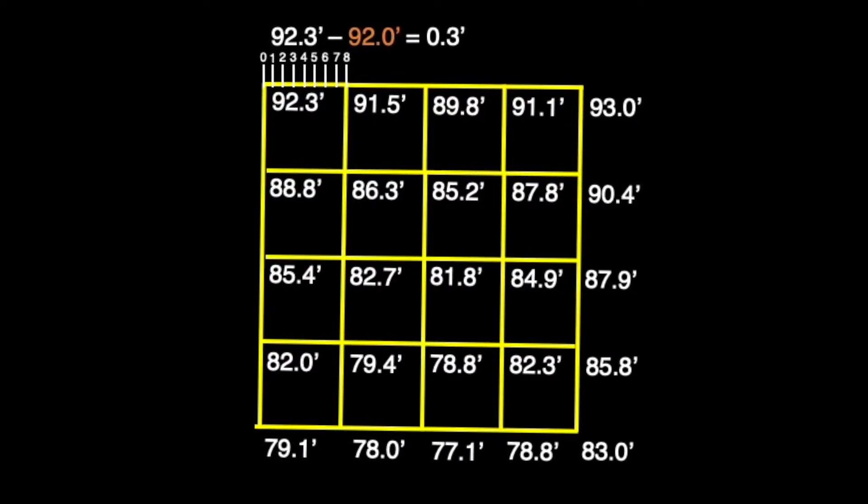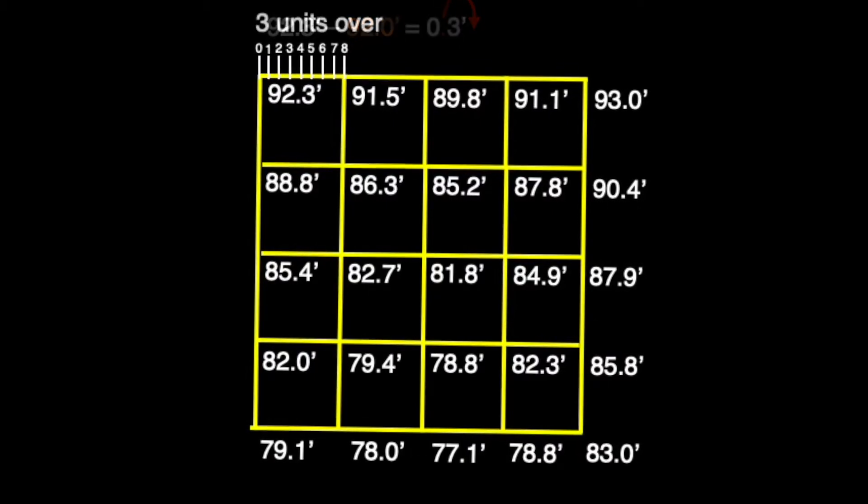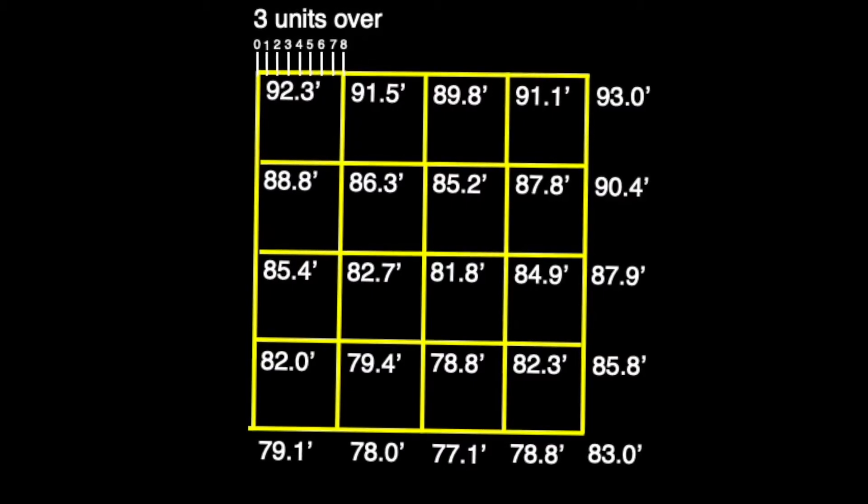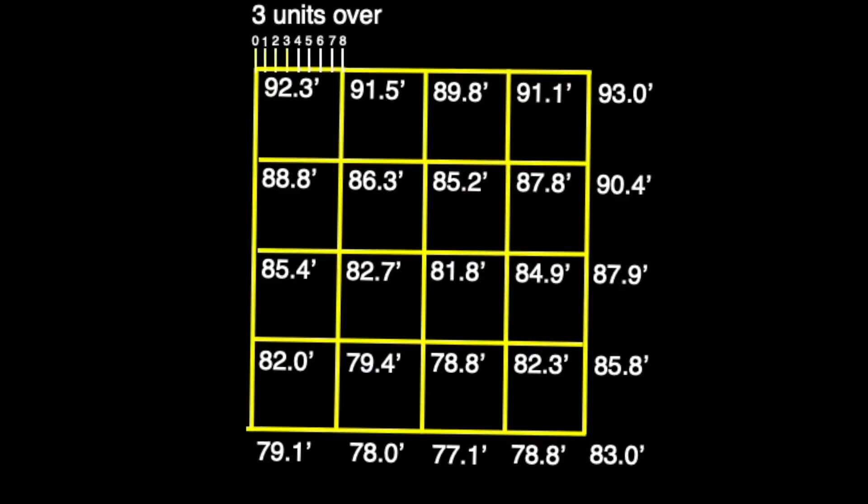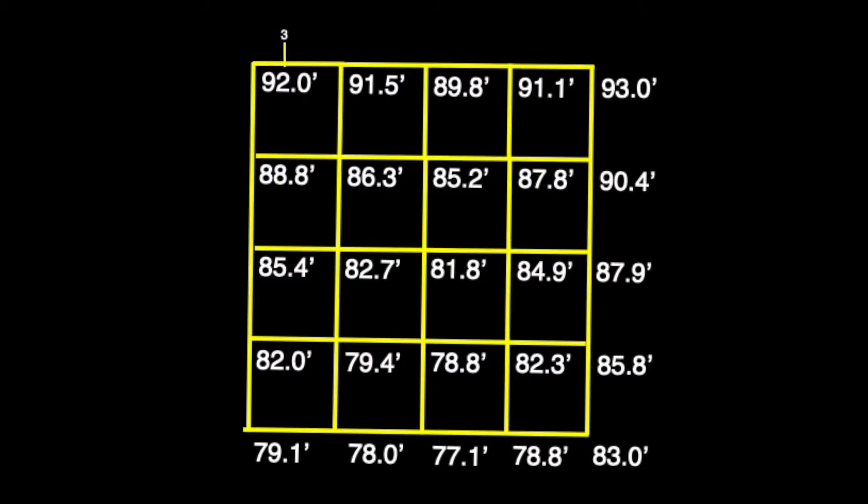At this point, just as we did before, we'll simply move our decimal place over one space to the right, and what we are left with is the amount of units we need to count in order to reach our desired whole number of 92 feet along the line.